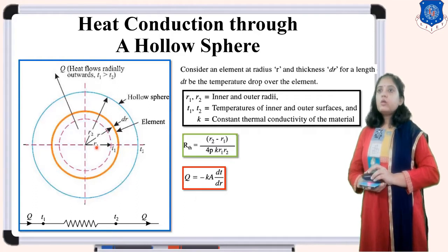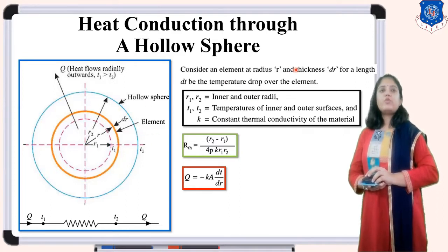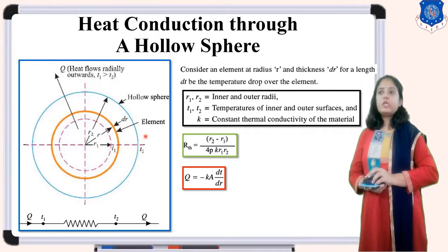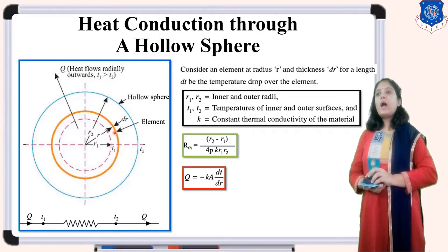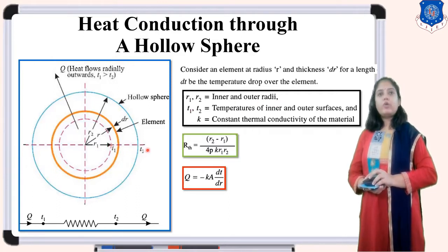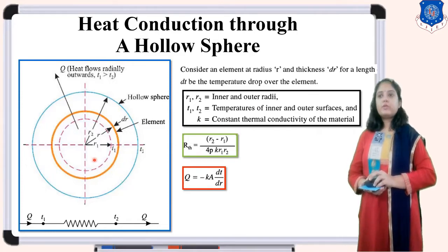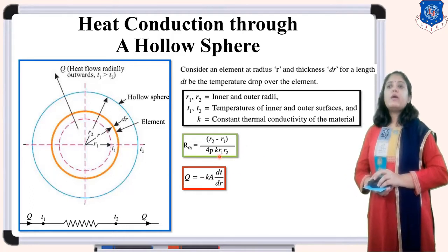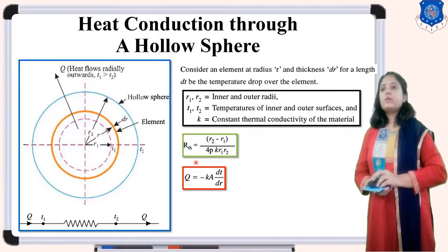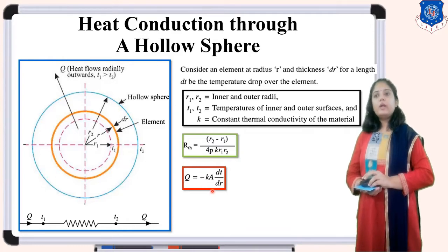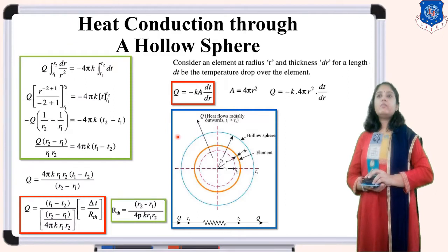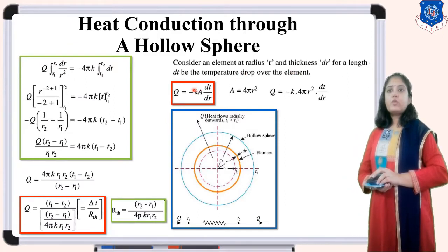Consider one element from the center. The radius is R, thickness of the element is DR, and the change of temperature over the length is DT. So temperature changes from one surface to the other — that is DT. R1 and R2 are the inner and outer radii of the sphere, T1 and T2 are the inner and outer surface temperatures, and K is the thermal conductivity of the sphere.